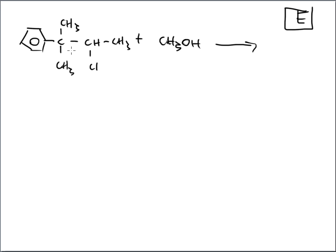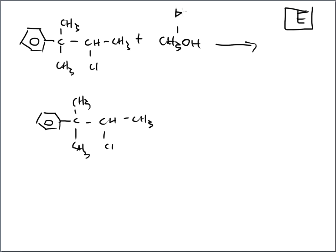Methanol is a poor nucleophile, so E1 happens. E1 gets rid of the halogen first, forms a carbocation, and allows rearrangement. Will the carbocation rearrange? Right now it's secondary. If it goes right, it's primary. If it goes left — that's one, two, three carbons — that could be a tertiary carbon. But to get there, something has to switch. This carbon has no hydrogens, but it does have a methyl group.